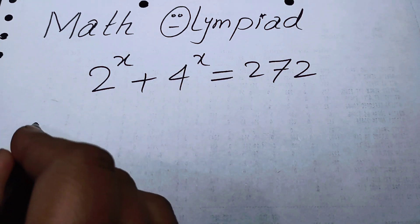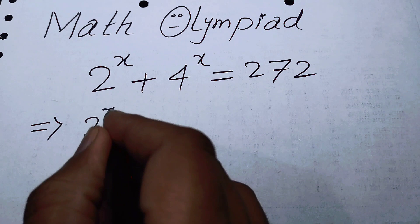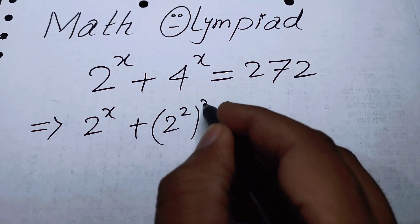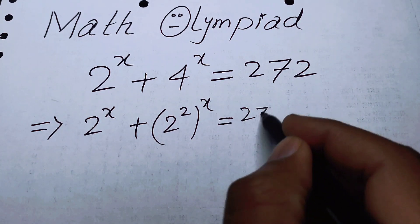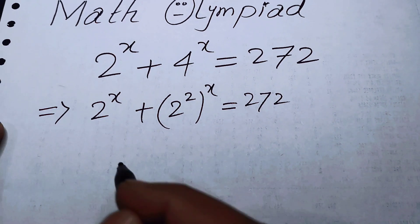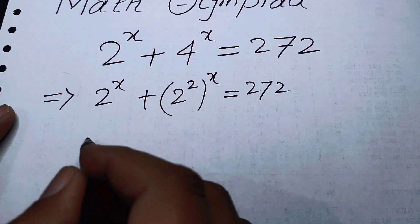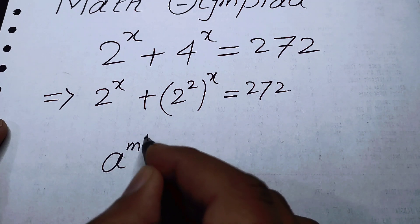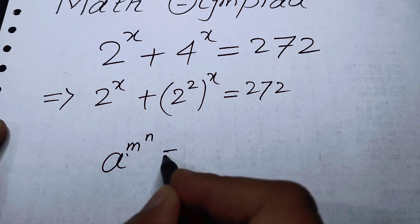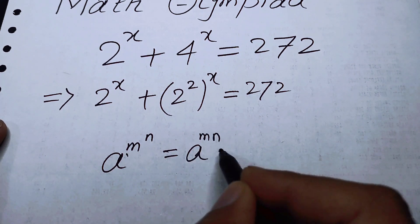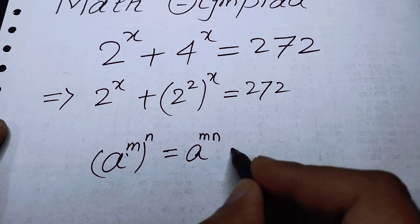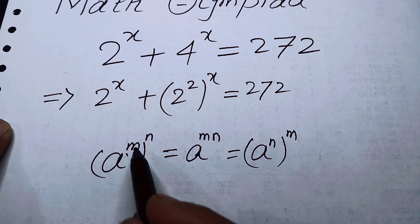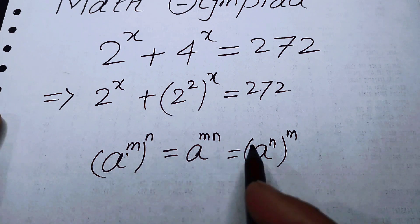The very first thing we are going to do is write 2 to the power of x as 2 to the power of x, and write 4 as 2 to the power of 2, whole power x, equal to 272. Using the exponent law: a to the power of m, to the power of n, equals a to the power of m times n — you can interchange the exponents and the answer remains the same.